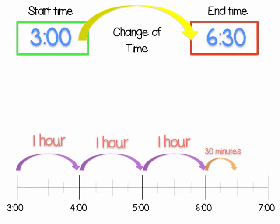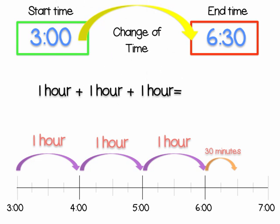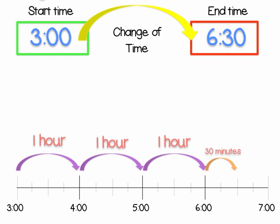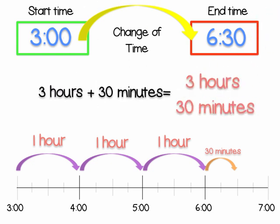The next thing we do is add the number of our intervals together. 1 hour plus 1 hour plus 1 hour equals 3 hours. 3 hours plus 30 minutes equals 3 hours and 30 minutes, or 3 and a half hours.